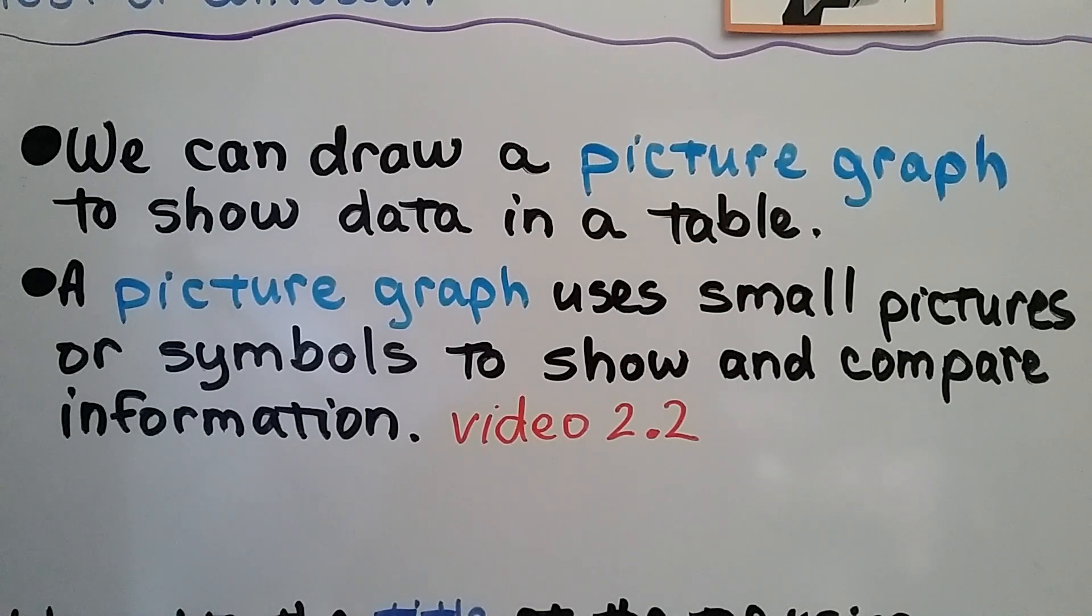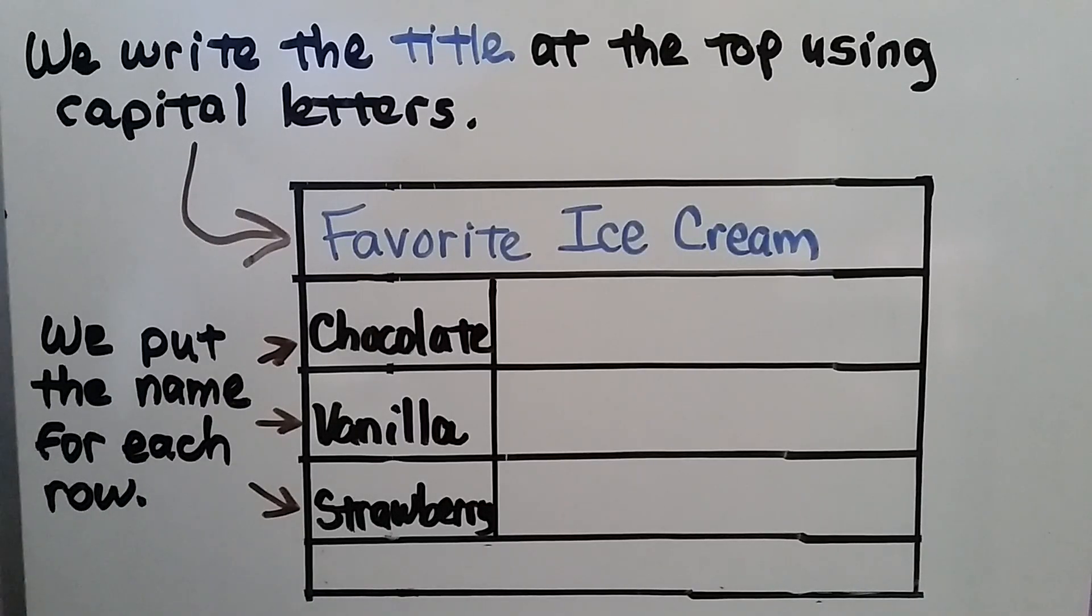We learned that in the last video, 2.2. When we make a picture graph, we write the title at the top using capital letters for each word. We put the name for each row.